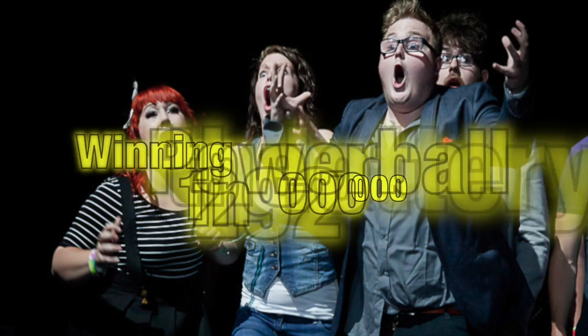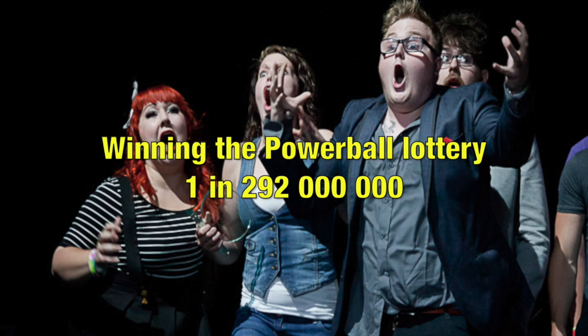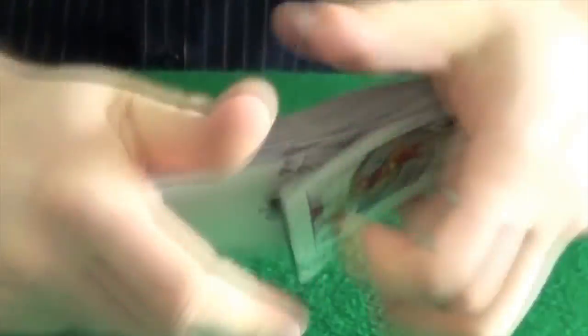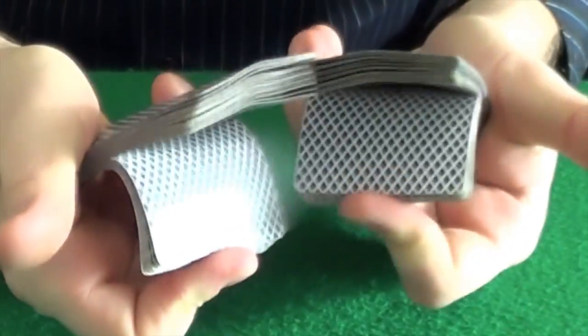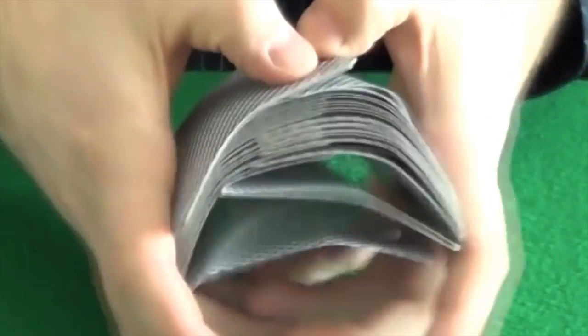Compare that to the chances of winning the record-breaking $1.5 billion Powerball lottery, which were one in 292 million. Not very good odds, but still a heck of a lot more likely than the exact order of a shuffled deck of cards ever having occurred before or ever being repeated again. So remember the next time you're shuffling cards, give yourself a pat on the back because you've just made history.